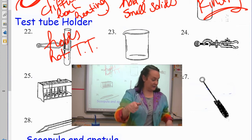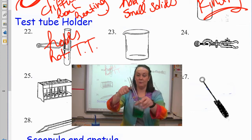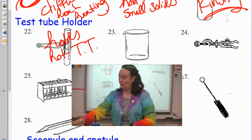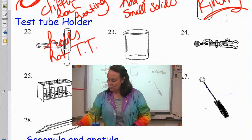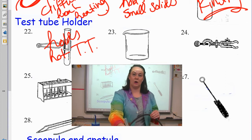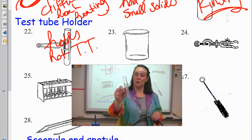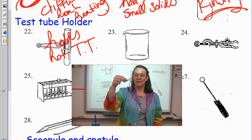You can use it to pull a hot test tube out of a beaker. Or you can use it to hold a test tube while heating. If you were then heating something up, and we talked about safety of this kind of stuff. But if you were heating something, you can hold it so you're not holding the glass. Test tube holder.